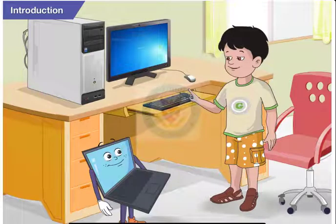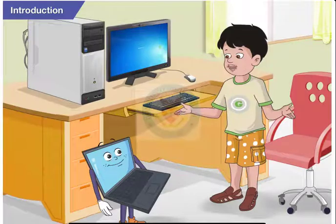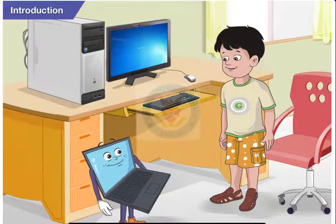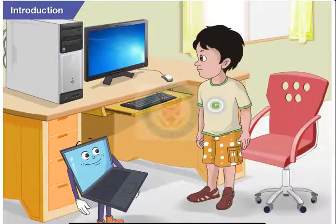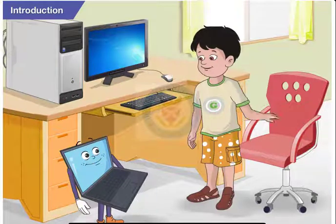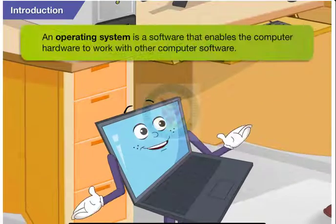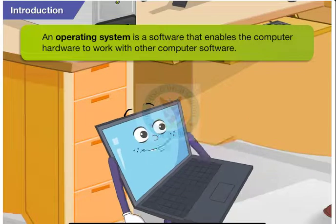Hi, Toggle. Look, my new computer. What are these high-speed changes that happen when I switch it on? Let me have a look. Alright, that's the operating system getting loaded. The operating system? What's that? An operating system is a kind of software that enables the computer's hardware to work with the other computer software.